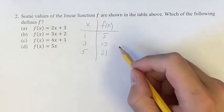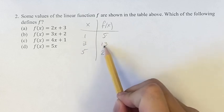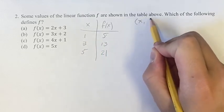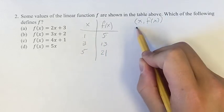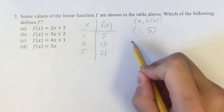So the slope, first we have to pick two points, so let's do this point and this point. So the point is going to be in the form x, f of x, so we have 1, 5, and 3, 13.